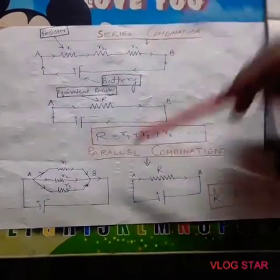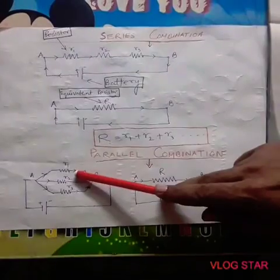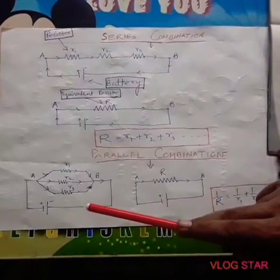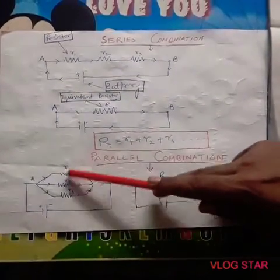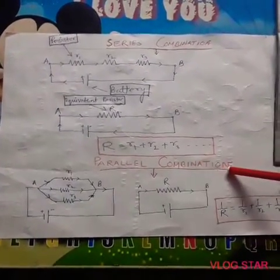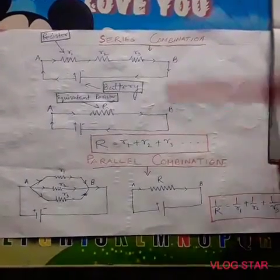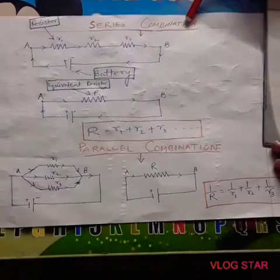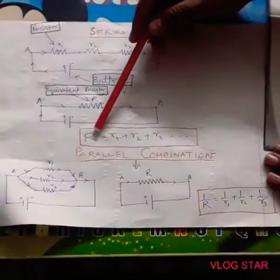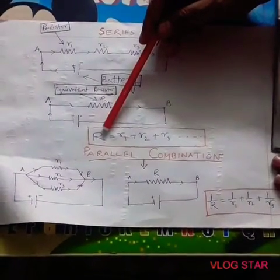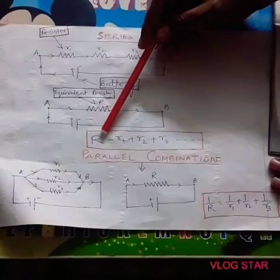When two or more resistors are connected parallely, this is called parallel combination. In case of series combination, the formula to find equivalent resistance is R1 plus R2 plus R3.